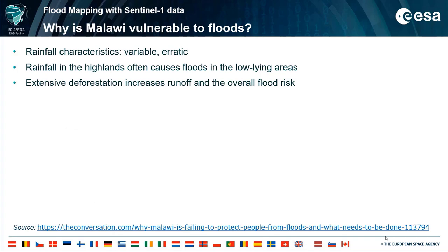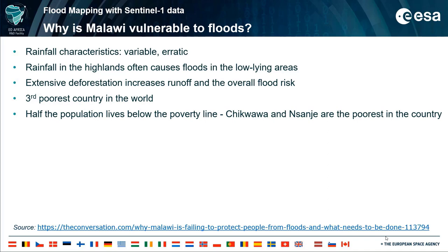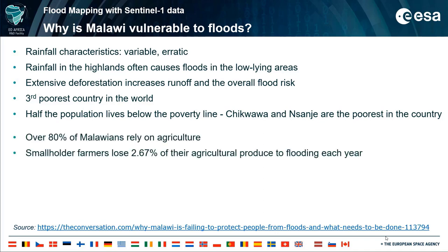One of the main reasons for floods in Malawi is the rainfall characteristics — rainfall is variable, erratic, and rainfall in the highlands often causes floods in the low-lying areas. Extensive deforestation also increases runoff and the overall flood risk. Malawi is the third poorest country in the world, with about half of the population living below the poverty line. The two regions particularly affected by floods are the poorest in the country. Over 80% of Malawians rely on agriculture — most are smallholder farmers. With their livelihoods reliant on a single rain-fed season, they are particularly vulnerable to floods.